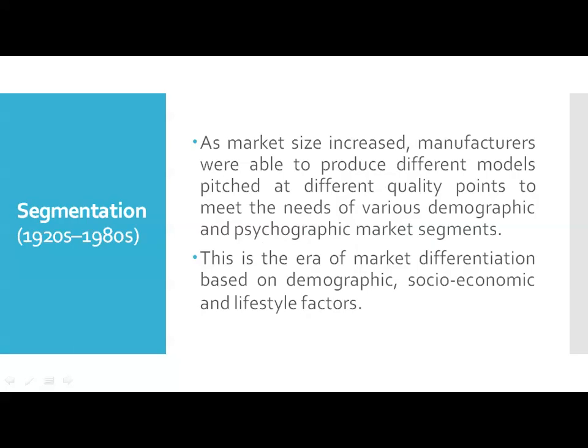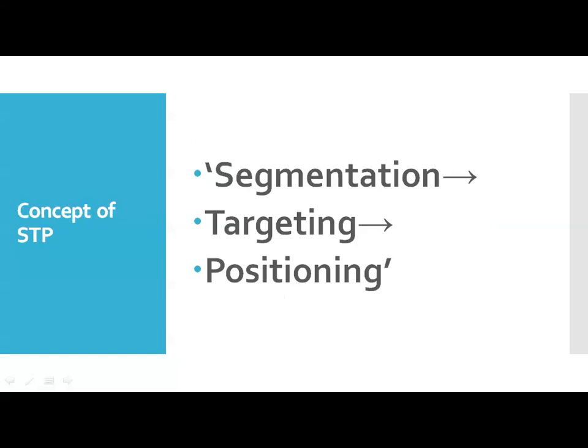We will now look at the concept of STP. STP stands for Segmentation, Targeting and Positioning. Many marketers use this STP approach to provide a framework for marketing planning objectives: the market is segmented, one or more segments are selected for targeting, and products and services are positioned in a way that resonates with the selected target market or markets.